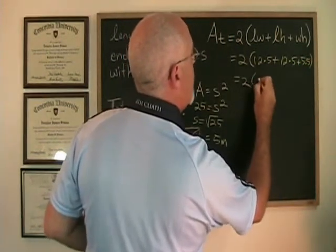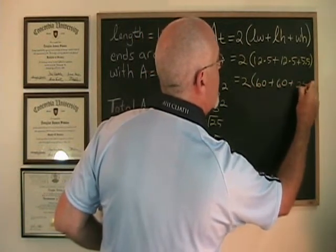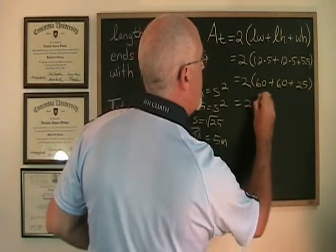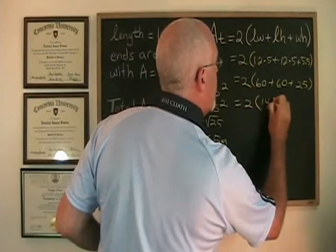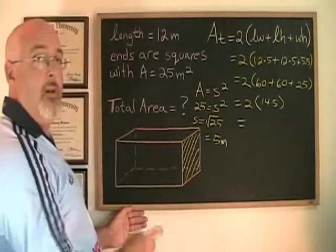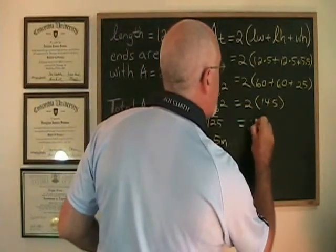12 times 5 is 60. 12 times 5 is 60. 5 times 5 is 25. 60 plus 60 plus 25 is 145. So the area total of our rectangular prism is 2 times 145, which is 290.